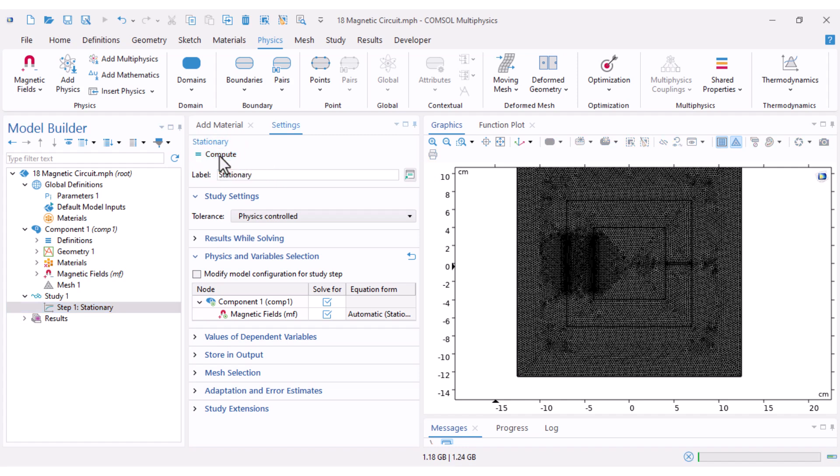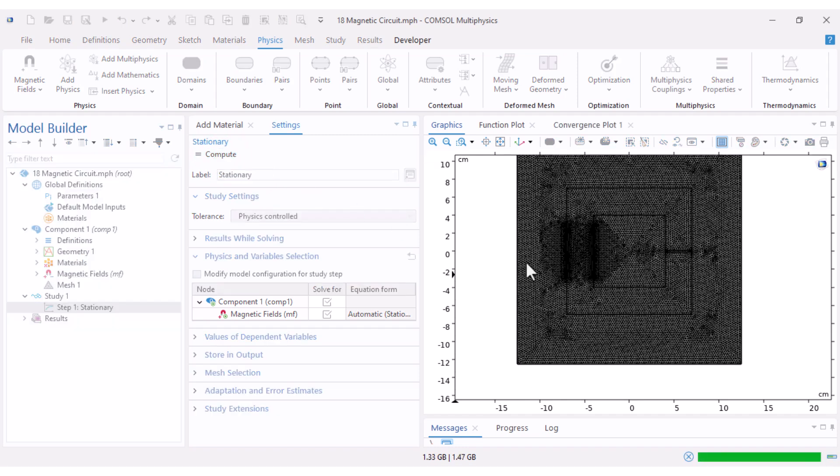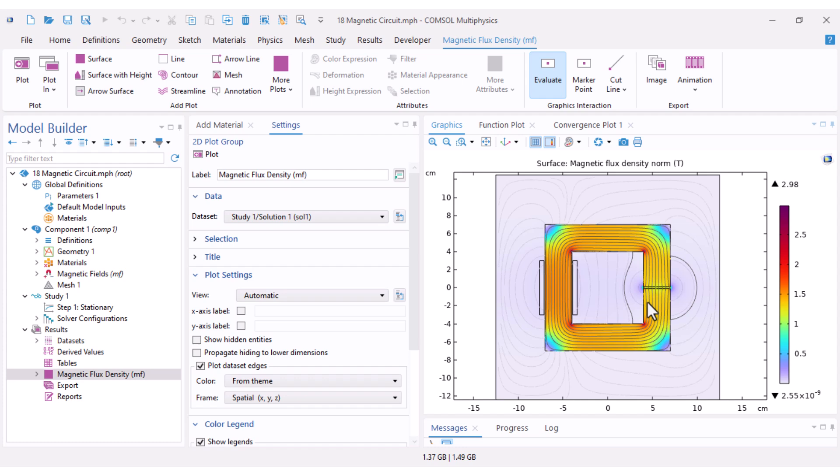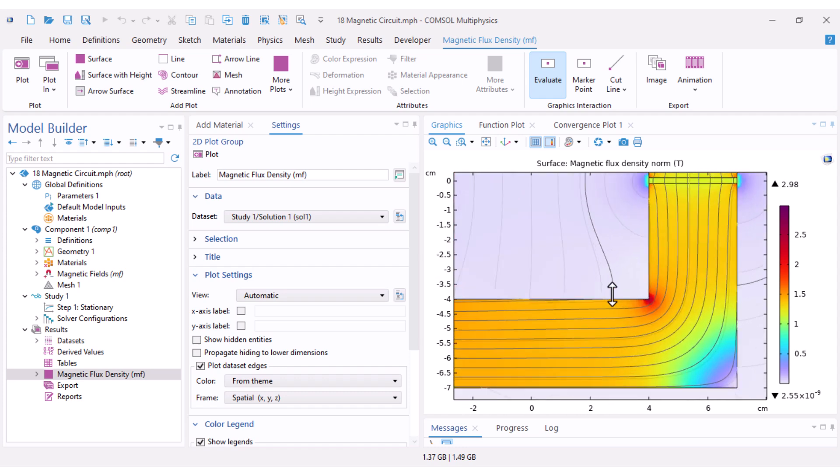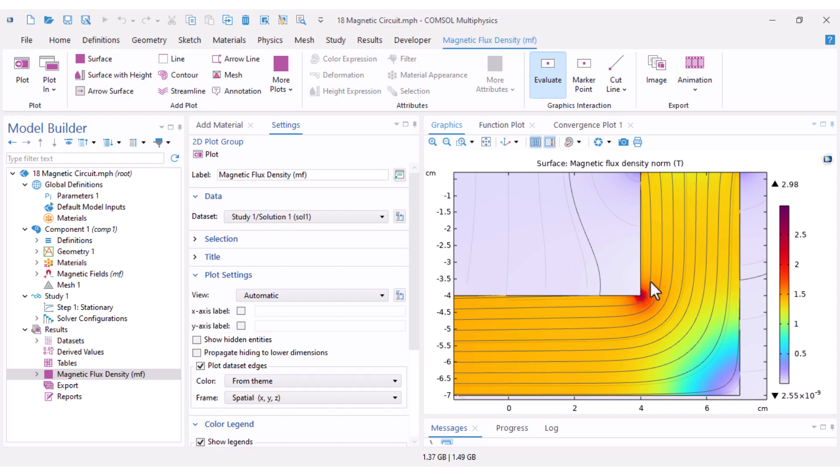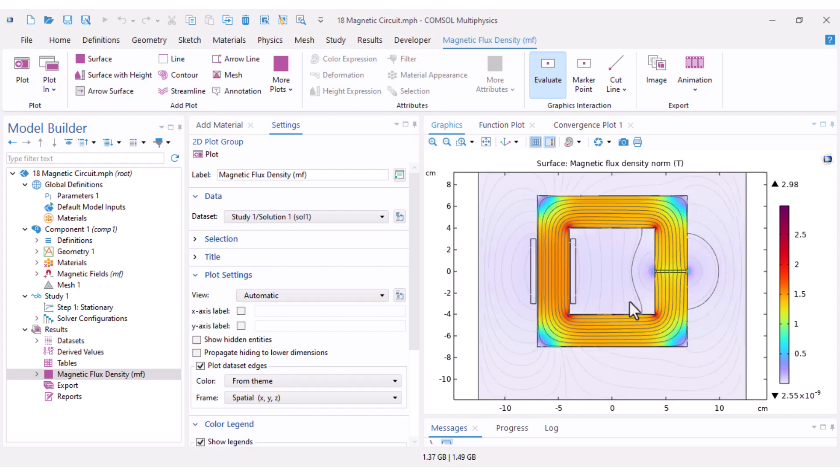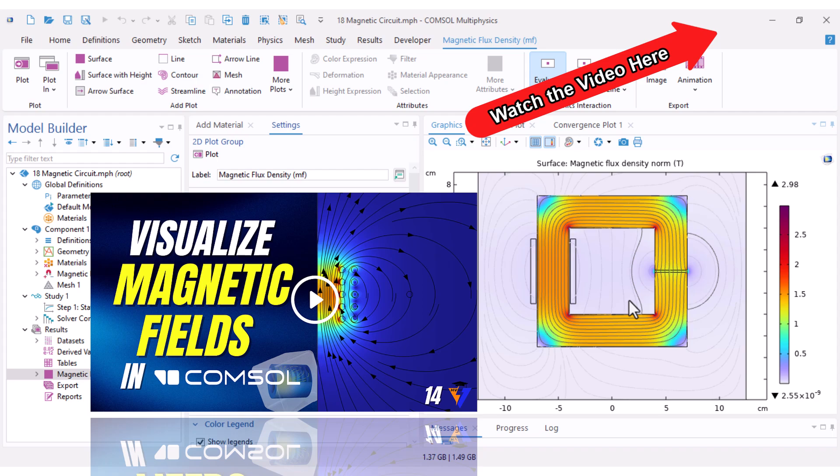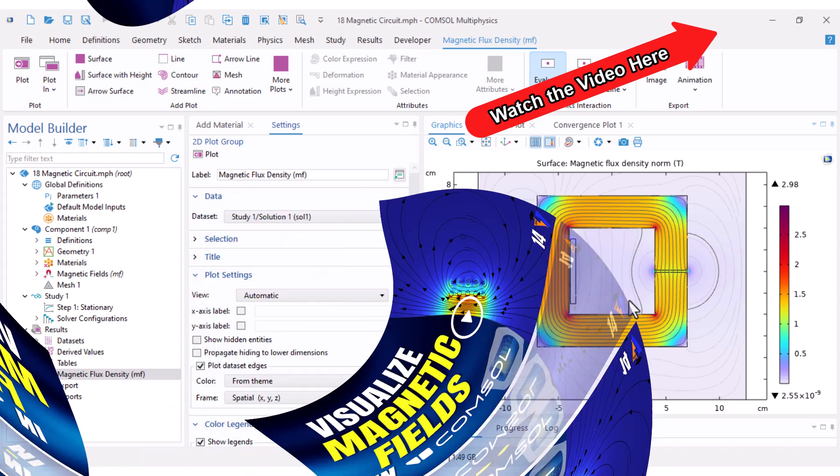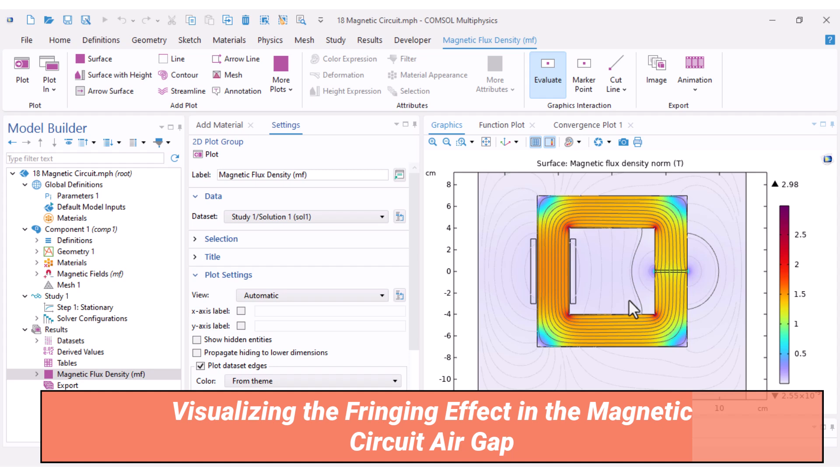Now we can see the results. The maximum magnetic flux density reaches about 3 tesla, quite high, but notice that these peaks appear only near the edges of the core. If you'd like a full explanation on magnetic field visualization check our previous video.